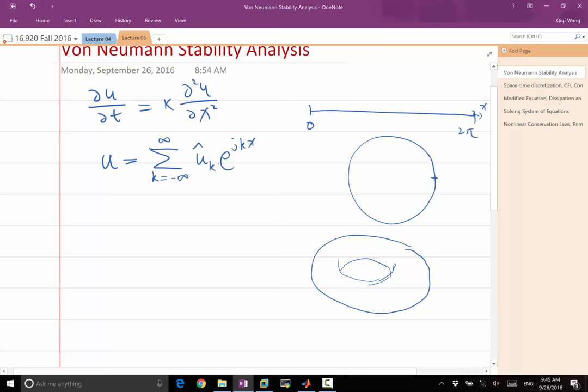Because when I plug this into the equation, the left-hand side becomes a summation of d u hat k dt e to the ijkx. So that is the left-hand side.